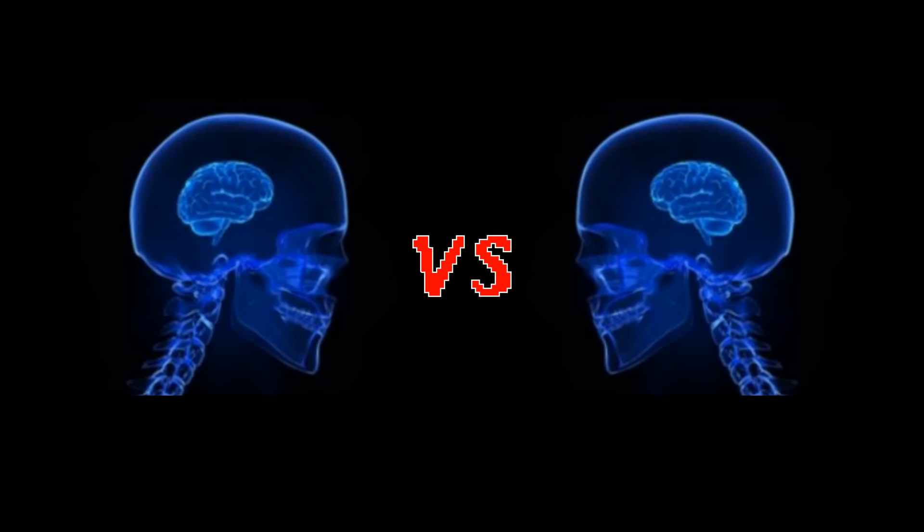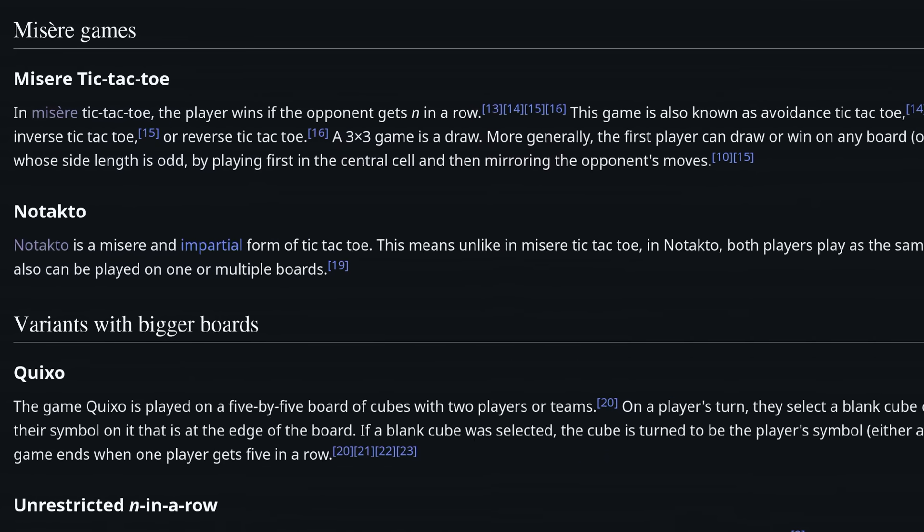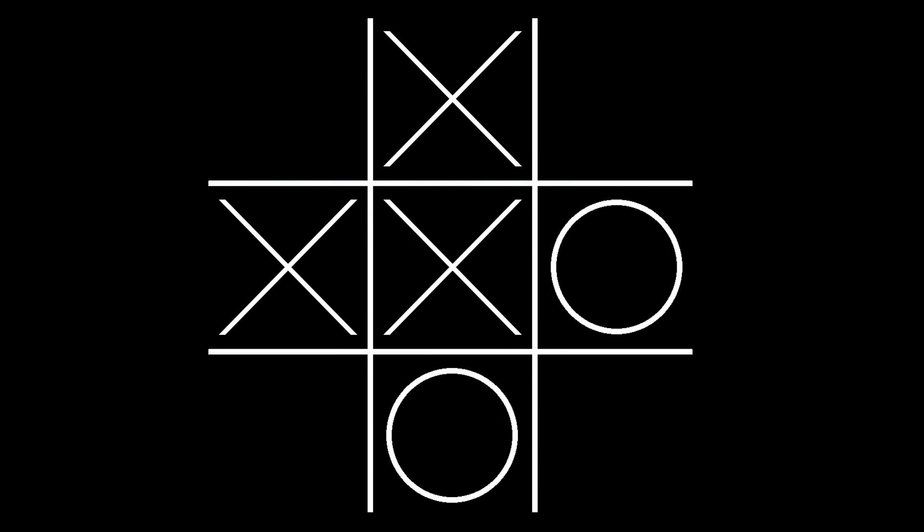But if you're playing against someone who's also trying to lose, we're entering the territory of a variant called miserere tic-tac-toe, for which you'd probably want to use something like a minimax algorithm, as I talked about in my second video. Still, you have to admit, this is some pretty bad tic-tac-toe playing.